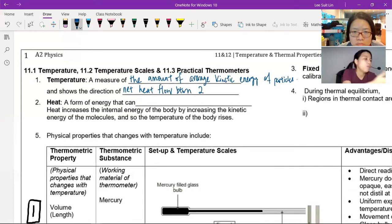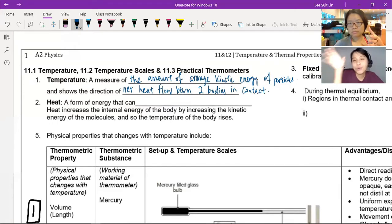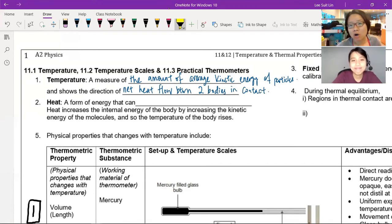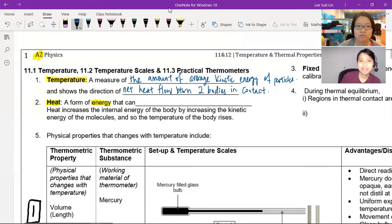Temperature also shows the direction of net heat flow between two objects in contact. So it's not heat energy, but it shows you where the heat is flowing from high temperature to low temperature, for example. You maybe hold a very cold Pepsi Cola container in your hand, you feel very cold. That means your body temperature is higher than the Pepsi Cola can. So heat is flowing from your hand to that Pepsi can.